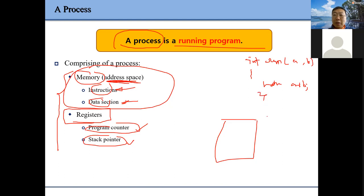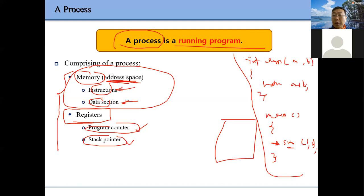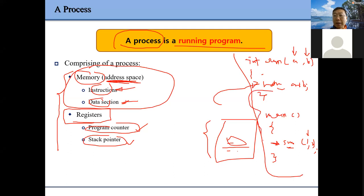Suppose we have a function 'sum(a, b)' that returns a+b, and we have a main function that calls sum. When we call this function, we switch to another stack frame for that function. It includes some local variables, the arguments we pass when calling the function, and the return address so after finishing we return back. Local variables related to a function are stored in the stack frame.